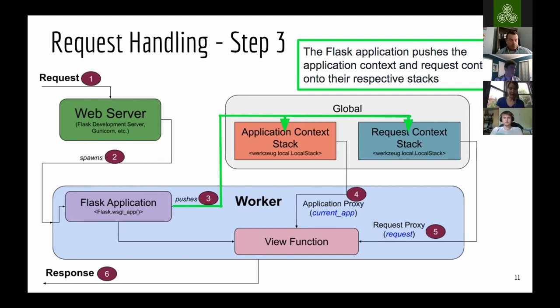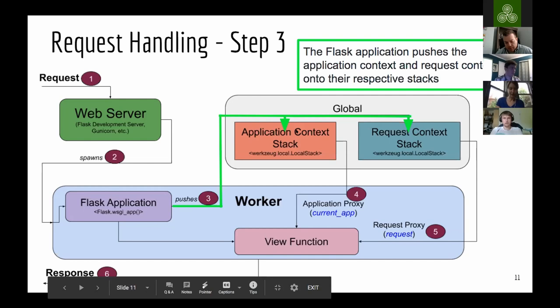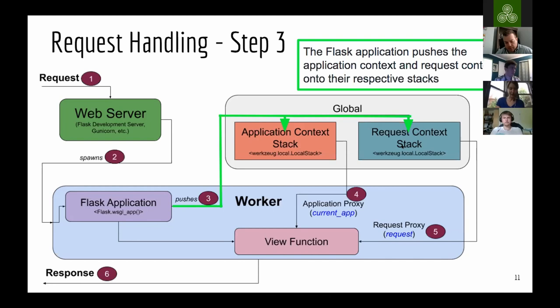Now execution switches over to the Flask application, which creates the request context and the application context and pushes them to their respective stacks. The application context goes into the application context stack, and the request context goes into the request context stack. It may be a little surprising to see these up here in the global namespace, but we'll talk more about why these two objects are global.